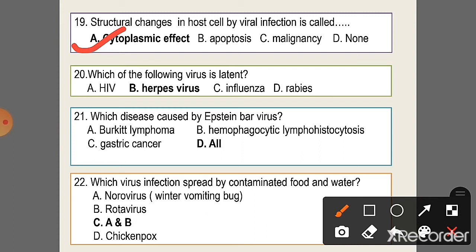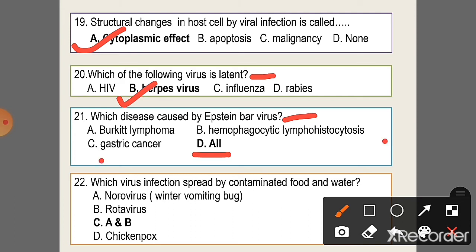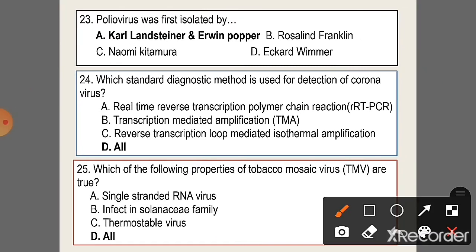Question 20: Which of the following viruses is latent? Option B, herpes virus. Latent means showing few signs of infection and remaining in dormant form for many years. Question 21: Which cancers are caused by viruses? Option D: Burkitt lymphoma, hemophagocytic lymphohistiocytosis, and gastric cancer. Question 22: Which virus infection spreads by contaminated food and water? Option C, both A and B: norovirus and rotavirus.